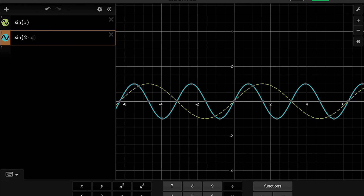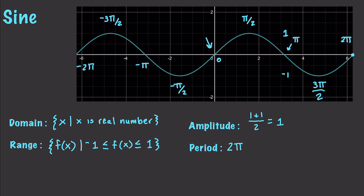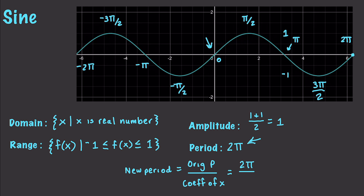Multiplying the input also affects the period. If the input value is negative, the graph reflects across the y-axis. To find the new period after multiplying the input by some value, the new period equals the original period divided by the coefficient of x. In our specific situation, the original period was 2 pi, and since we multiplied the input by 2 — using 2x instead of just x — the new period is 2 pi divided by 2, which gives us pi.